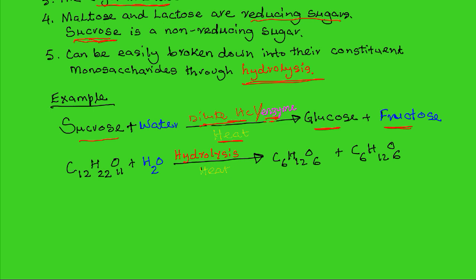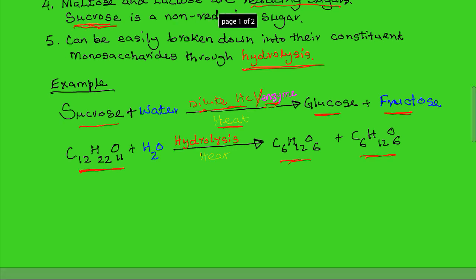Once you do that, the dilute hydrochloric acid acts as a catalyst and the sucrose molecule is split into glucose and fructose. Chemically, using symbols, we can represent the splitting — this disaccharide, which can be sucrose, lactose, or maltose, is hydrolyzed either using hydrochloric acid in the laboratory or using enzymes into the constituent monosaccharides.